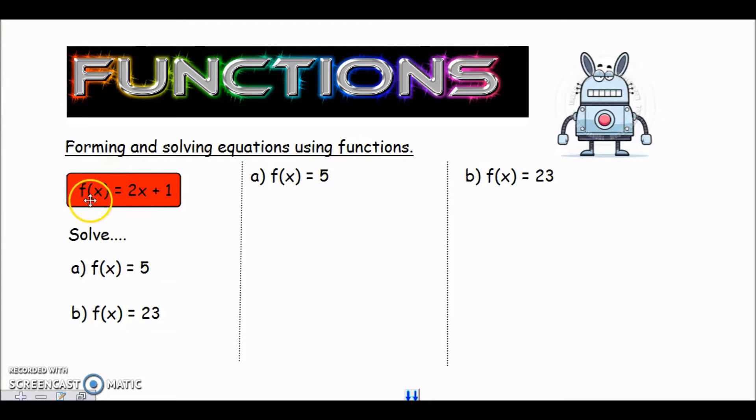But this time the notation is slightly different. If you look at part a, it's saying f(x) = 5, so it's saying the function equals 5. It doesn't mean put 5 into the function, because there would be a 5 in the bracket instead of the x if that's what we had to do. It's saying set the function equal to 5.